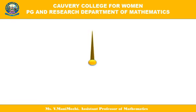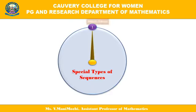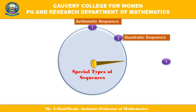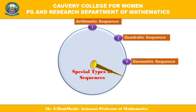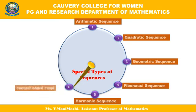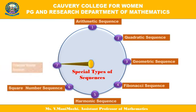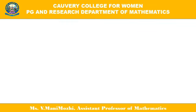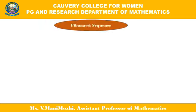There are a few special sequences like arithmetic sequence, quadratic sequence, geometric sequence, Fibonacci sequence, harmonic sequence, square number sequence, triangular number sequence, and cube number sequence. Among these special types, we shall analyze the Fibonacci sequence using one example.